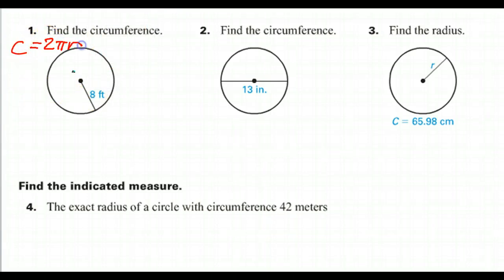so 2πr. So in this case, the circumference is going to be 2π times 8. So that circumference is going to be 16π. So that would be our exact answer, 16π.